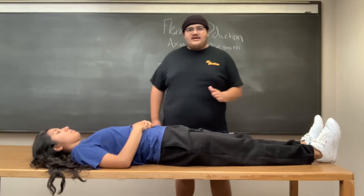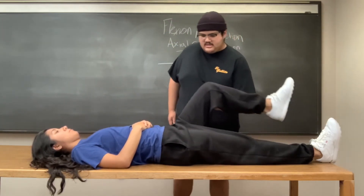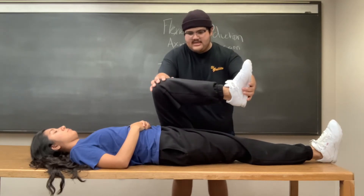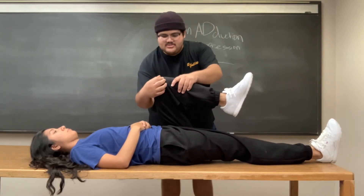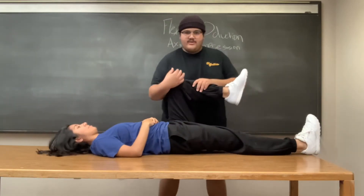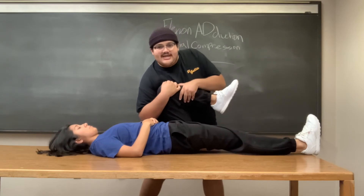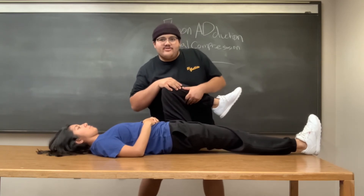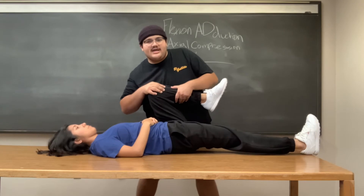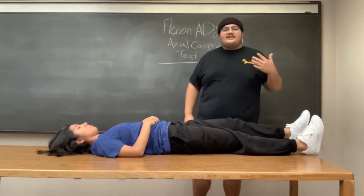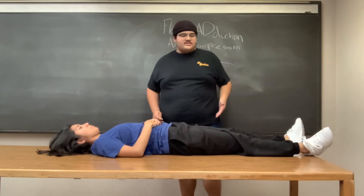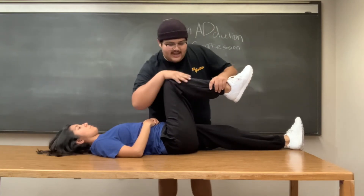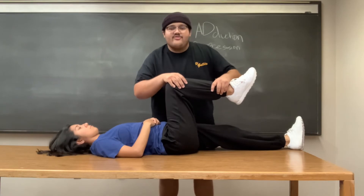We are going to have the patient fully flex their hip to 90 degrees. Then we are going to adduct as far as possible. Now we are going to push straight down and provide axial compression. This compression goes from the femur to the hip and we want to try and stretch that posterior side. Any positive sign will be any reproduction of pain in the labrum. Now we are going to perform this on the affected leg — flex the hip to 90 degrees and provide axial compression through the femur to the hip.